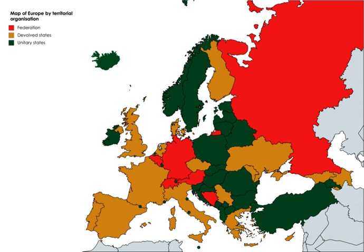According to Daniel Ziblatt's Structuring the State, there are four competing theoretical explanations in the academic literature for the adoption of federal systems. Ideational theories hold that a greater degree of ideological commitment to decentralist ideas in society makes federalism more likely to be adopted. Cultural historical theories hold that federal institutions are more likely to be adopted in societies with culturally or ethnically fragmented populations.